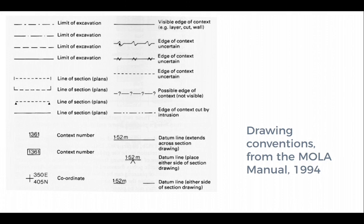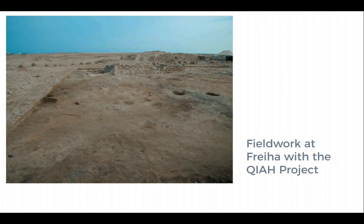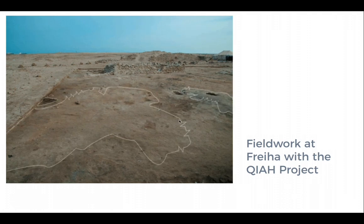There's the limit of excavation, an uncertain edge for when you're not quite sure what you're seeing, and hard edges that generally show real features. In Qatar working with the QIAH project on a very large open area excavation, it was difficult to see different layers in the sand. The site was characterized by many overlapping sand drifts, sometimes with cultural features. Here I tried to show where the uncertain edges were — I wasn't sure where this context ended in one direction, was fairly certain going around another way, with another small uncertain edge, and then the limit of excavation on the edge.